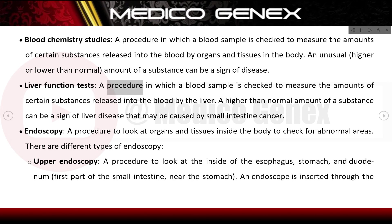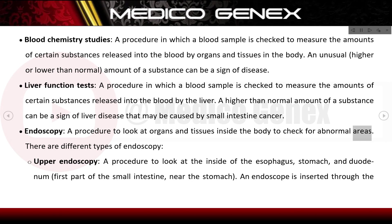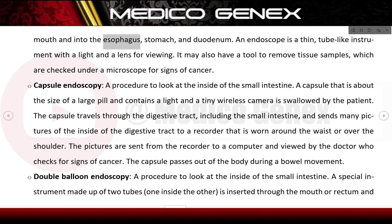Liver function tests check a blood sample to measure amounts of certain substances released by the liver; a higher-than-normal amount can be a sign of liver disease that may be caused by small intestine cancer. Endoscopy is a procedure to look at organs and tissues inside the body to check for abnormal areas. One type examines the inside of the esophagus, stomach, and duodenum — the first part of the small intestine near the stomach. An endoscope — a thin tube-like instrument with a light and lens for viewing — is inserted through the mouth and may also have a tool to remove tissue samples checked under a microscope for signs of cancer.